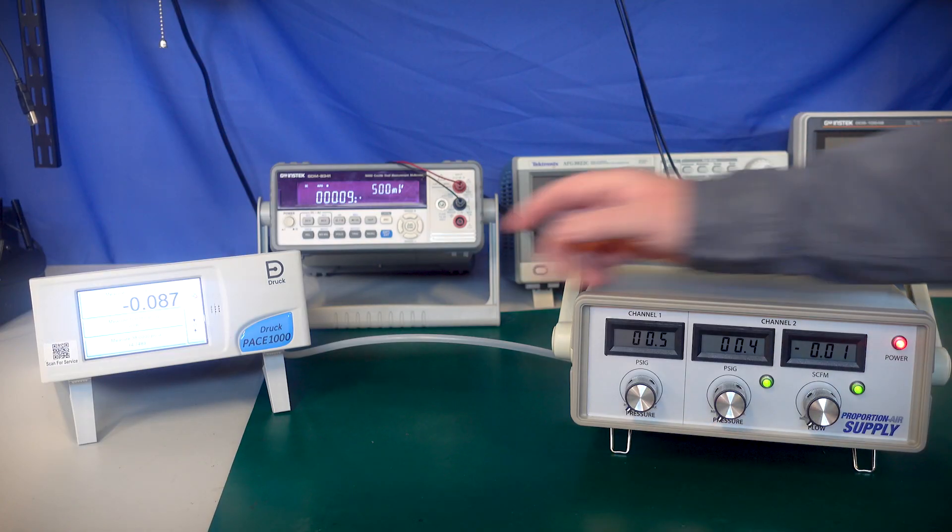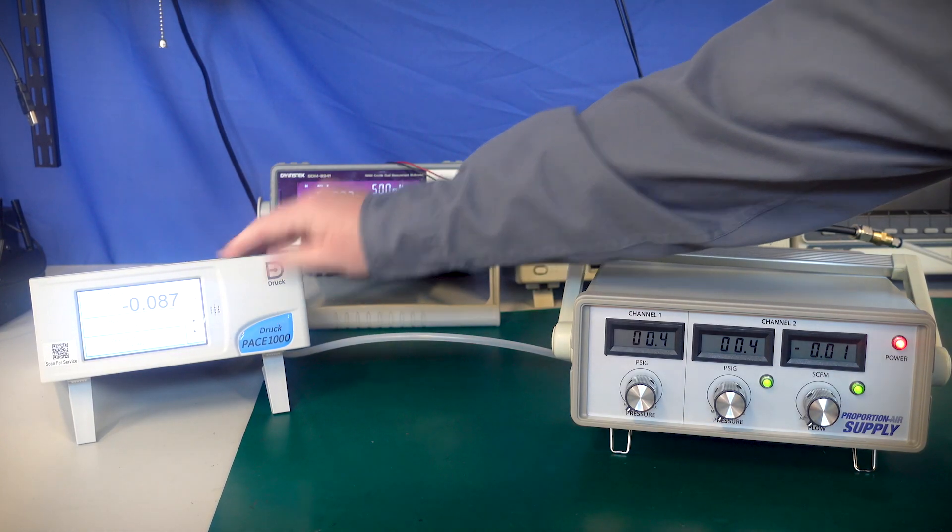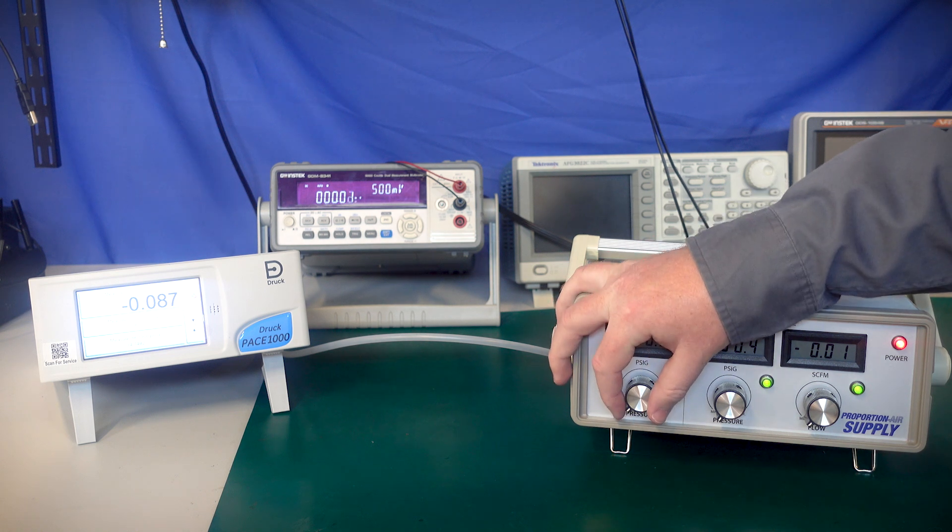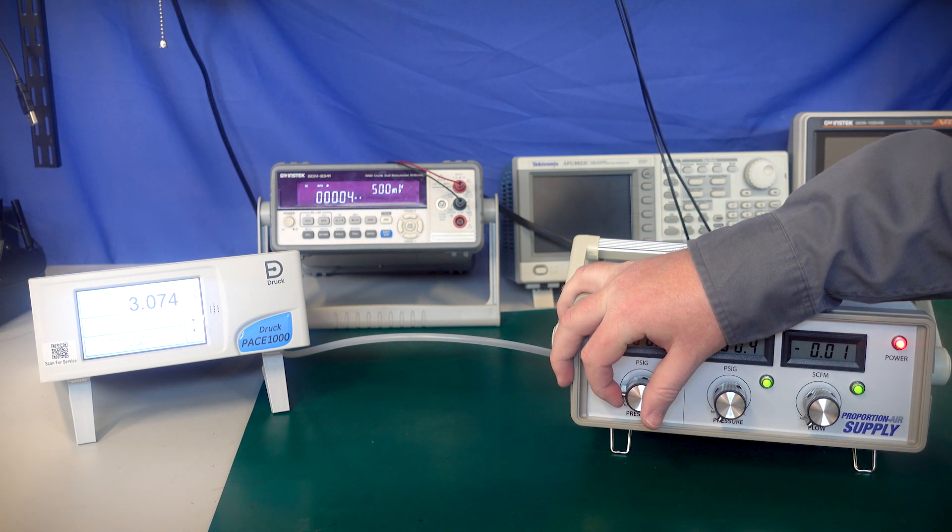Channel one controls pressure only. So we will see here as you turn the knob and increase pressure out of the Proportion Air Supply, the pressure out increases.